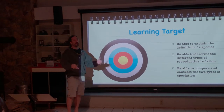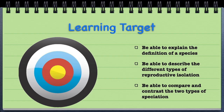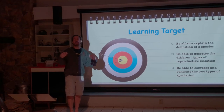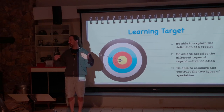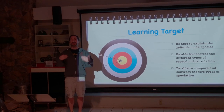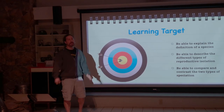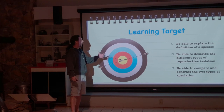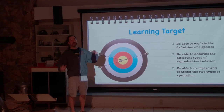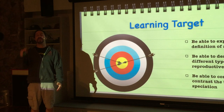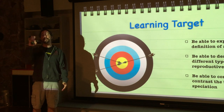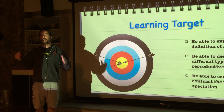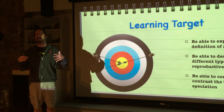First, we're going to actually define what a species is. Second, we're going to look at what are called reproductive isolating mechanisms, and hopefully by the end of this, you'll be able to describe the different reproductive isolating mechanisms that exist. Lastly, we're going to look at comparing and contrasting two types of what is called speciation, or giving rise to a new species. How can a new species be formed?